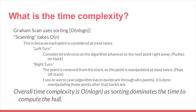When we are making a left turn on the road, it is considered only once as the algorithm advances to the next point right away by pushing it on the stack. If we make a right turn, the point is removed from the stack, so the point is manipulated at most twice as we pushed it on the stack during the left turn process and now we are popping it off the stack.